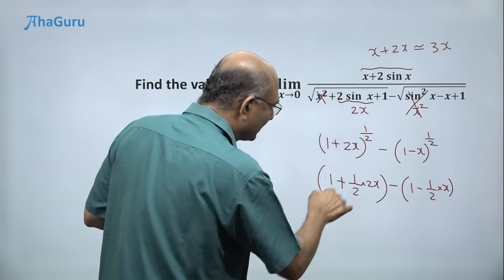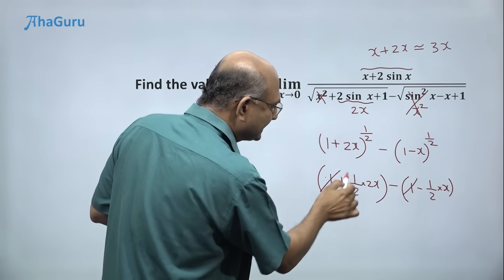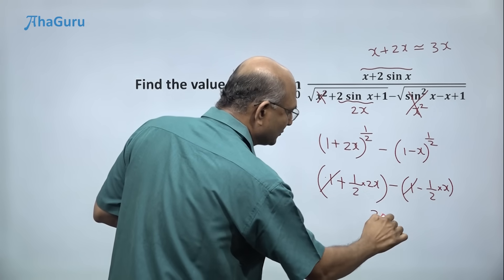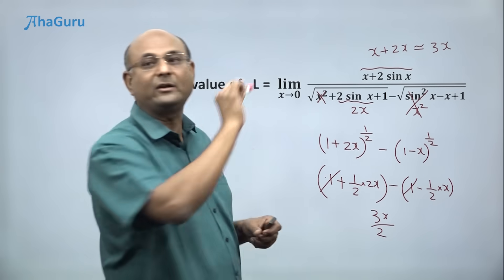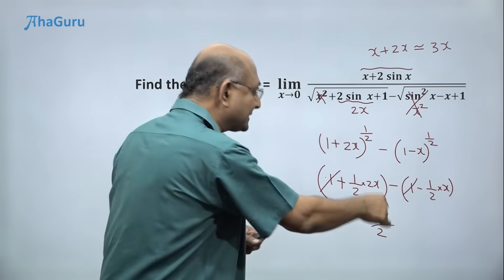Now if you see this, the 1 cancels out. And this is x plus x by 2. So that gives us 3x by 2. So the denominator is 3x by 2.